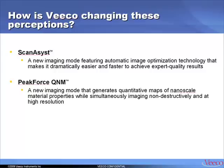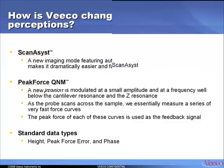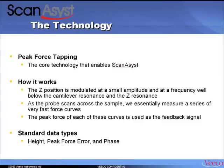The second one is Peak Force QNM. That's a new package that generates quantitative maps of nanoscale material properties while at the same time images the sample non-destructively and at very high resolution. The technology enabling ScanAssist is something we refer to as peak force tapping. It works by modulating the Z position at a small amplitude and a frequency well below any resonance of your system. While the probe scans across the sample, we measure a series of very fast force-distance curves, with speed determined by the modulation frequency. The peak force of each of these force-distance curves is then used as the feedback signal.